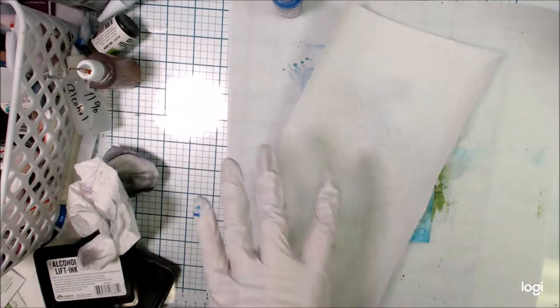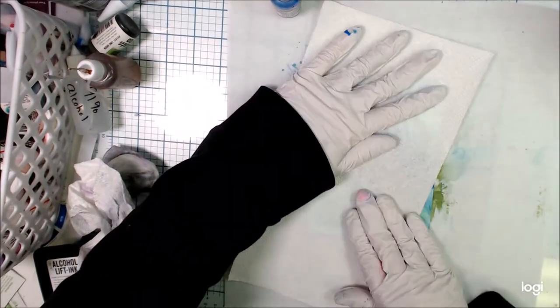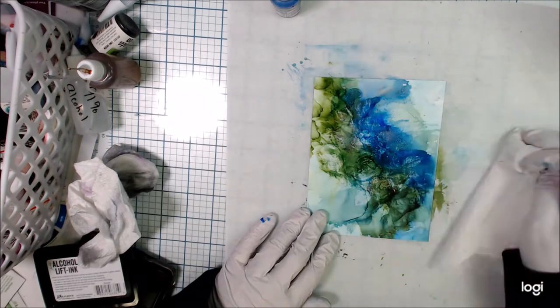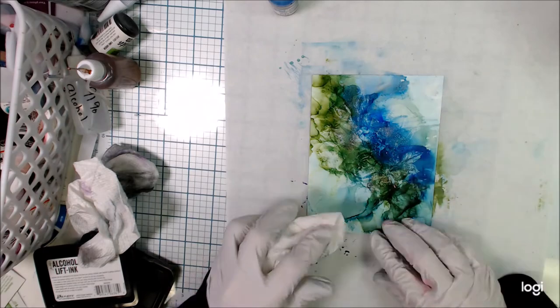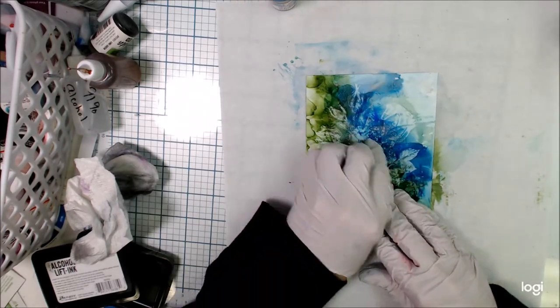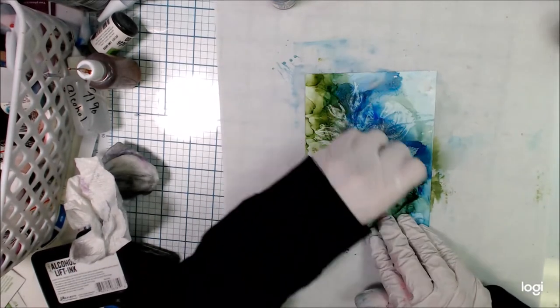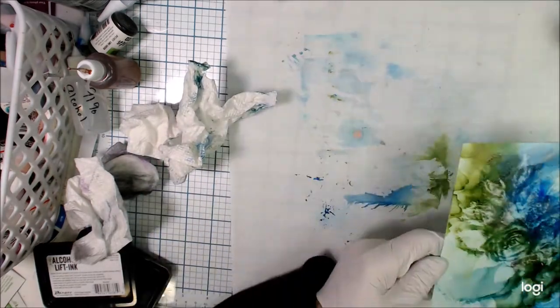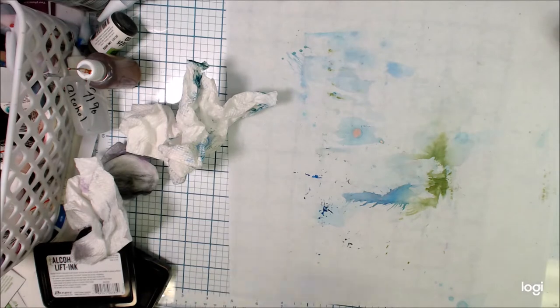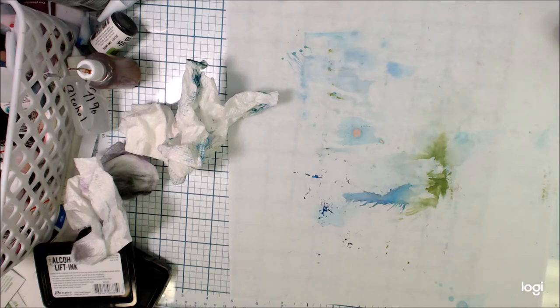Now I'm going to use the kitchen towel and I'm going to lift the impression that we made with the alcohol lift ink on the original Yupo piece. I'm just pressing it to get any of the wet spots up and then I come back and buff it a little bit with that kitchen towel. And that is how you use the alcohol lifting.